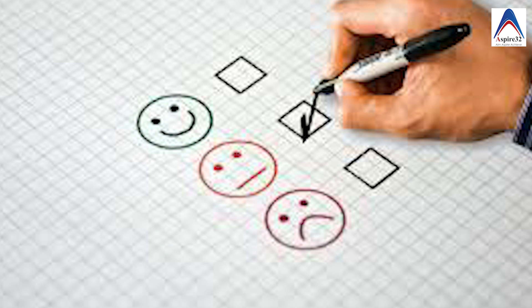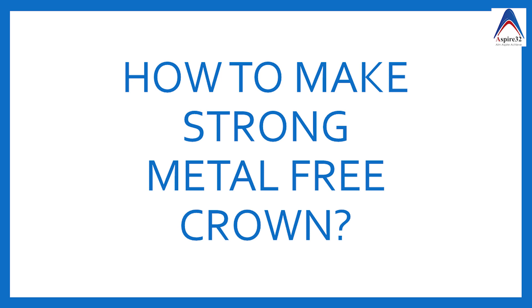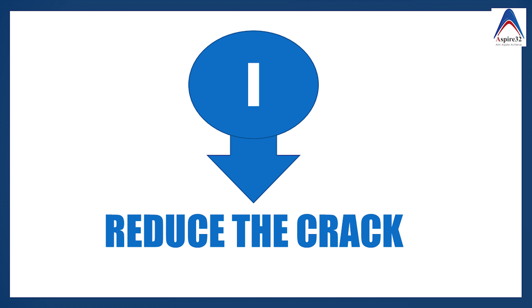Research continued to achieve a crown without any metal coping while giving very good aesthetics. This was achieved by making four different changes in the ceramic: first, reducing surface cracks; second, introducing residual compressive stress; third, interrupting crack propagation; and fourth, design modification.